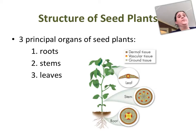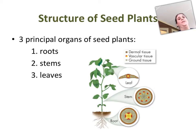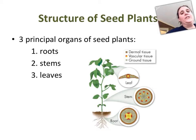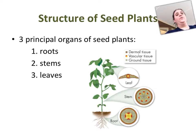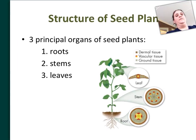So if you're doing the outline view, we're going to go over the three organs of seed plants, the different types of tissues that you'll find, and then we'll go in depth into each one of those and round out the discussion with meristems, which are how plants grow. So the three principal organs of seed plants are the roots, stems, and leaves.